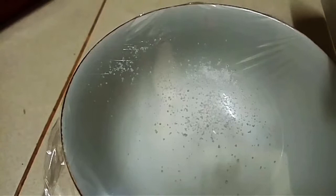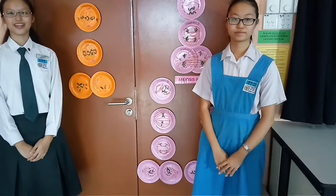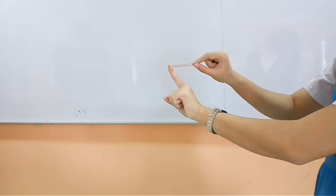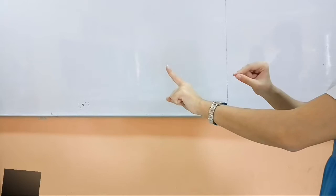Our fourth experiment is about potential and kinetic energy. All you need is just a rubber band. First, position the rubber band on your finger and pull it. Then, let it go! When we pull the rubber band, it contains potential energy. But when we let go, kinetic energy is found.